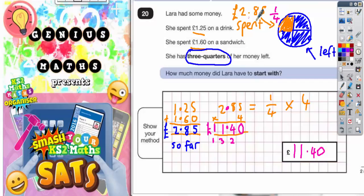And if you know that the £2.85 is worth one quarter of the total amount, multiply by four and you will get the total amount. So £11.40 must be the total of all the four quarters that she started with. So how much does she start with? That is £11.40.